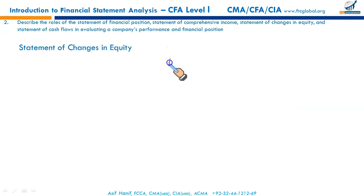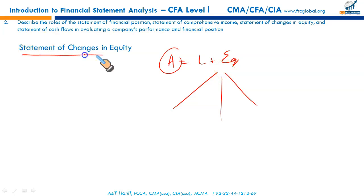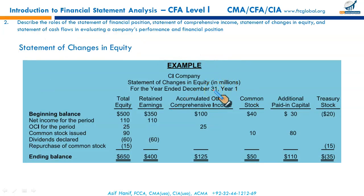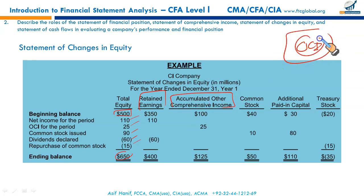The statement of changes in equity shows all changes in equity accounts over a reporting period. Equity is not a single static account — it exists in different forms just as assets do. This statement provides a reconciliation between the opening and closing balances of equity accounts and the changes during the period. Forms of equity include retained earnings, accumulated other comprehensive income, common stock, additional paid-in capital (called share premium in India and Pakistan), and treasury stock.